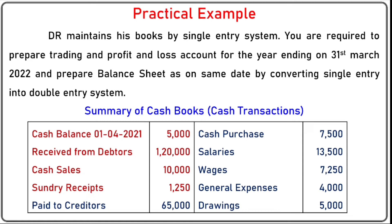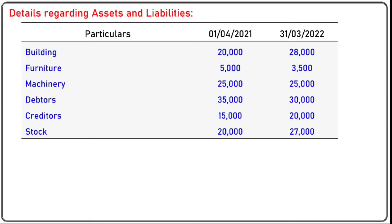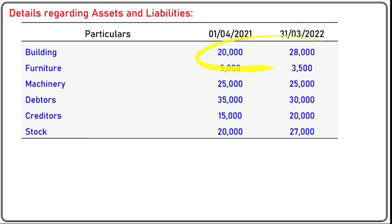We are also given information on assets and liabilities: building (opening and closing), furniture (opening and closing), machinery (opening and closing), debtors (opening and closing), creditors (opening and closing), and stock (opening and closing). For building, opening is 20,000 and closing is 28,000 — it means there is an increase of rupees 8,000.